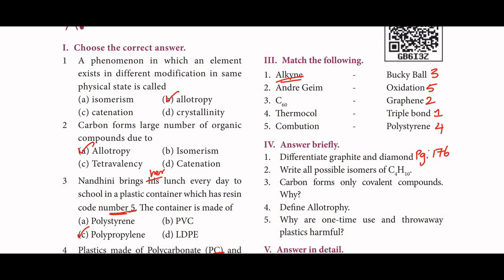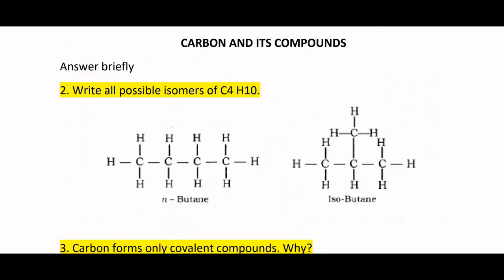Write all possible isomers of C4H10. There are two possible isomers of C4H10: one is N-butane and the next is isobutane. N-butane has a straight-chain structure, and isobutane has a branched structure.